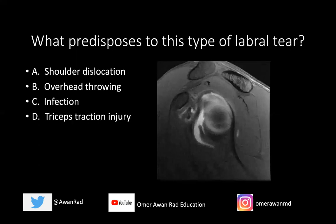I also have a follow-up question regarding the same image: what predisposes to this type of labral tear? Is it shoulder dislocation, overhead throwing, infection, or a triceps traction injury? What predisposes to this type of labral tear that you're seeing on this MRI arthrogram study?